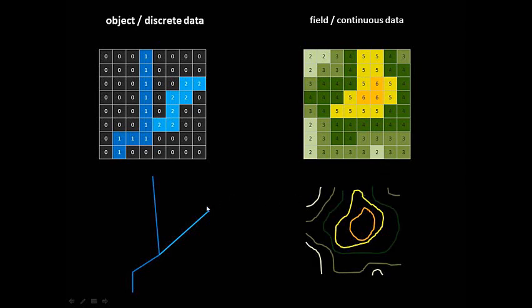But both data models can do object or field phenomena. But the vector is kind of better at this object representation and the raster is kind of better at this field representation. But you should be conscious of both the data model type and the type of phenomenon you're trying to map.